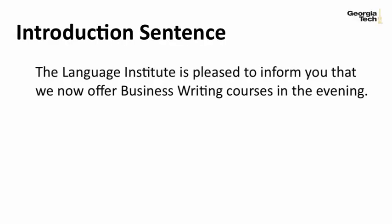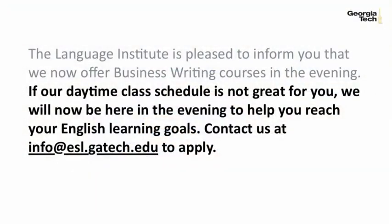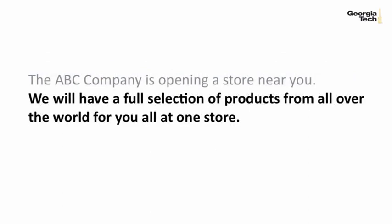So we have looked at two types of introduction emails. Let's move on now to announcement emails. An announcement email is a bit different because you really want to attract your reader's attention. Therefore, the language will be more bold and direct. In some cases, the language may even be similar to an advertisement. For example: 'The Language Institute is pleased to inform you that we now offer business writing courses in the evening.' Or: 'The ABC company is opening a store near you.' The tone is more direct and confident. For instance: 'If our daytime class schedule is not great for you, we will now be here in the evening to help you reach your English learning goals. Contact us at info at esl.gatech.edu to apply.' Or: 'We will have a full selection of products from all over the world for you, all at one store.'